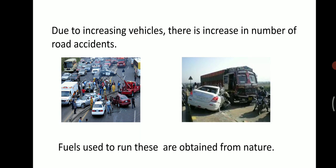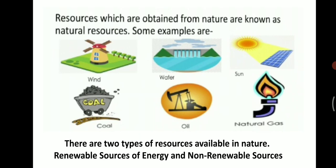Due to increasing vehicles, there is also an increase in the number of road accidents. Every now and then, we hear that an accident has taken place and people have died. Fuels used to run these vehicles are obtained from nature. Resources which are obtained from nature are known as natural resources. Some examples are wind, coal, water, oil, sun, and natural gas.